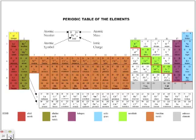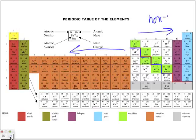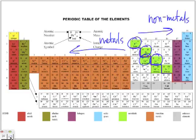Here is our periodic table with the aluminum ladder marked. On one side we have metals and on the other non-metals — notice how the majority are metals. The green elements along the ladder are the metalloids, the ones that exhibit similar properties to both metals and non-metals.